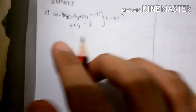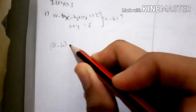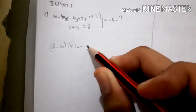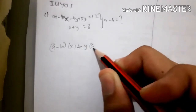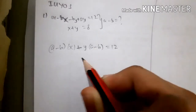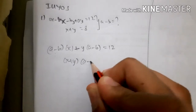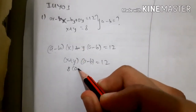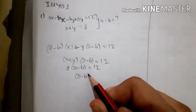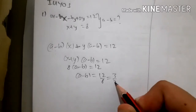We factorize the equation: (a minus b)x plus y(a minus b) equals 12, so (a minus b)(x plus y) equals 12. We know that x plus y is 8, so a minus b is 12 over 8, which simplifies to 3 over 2.